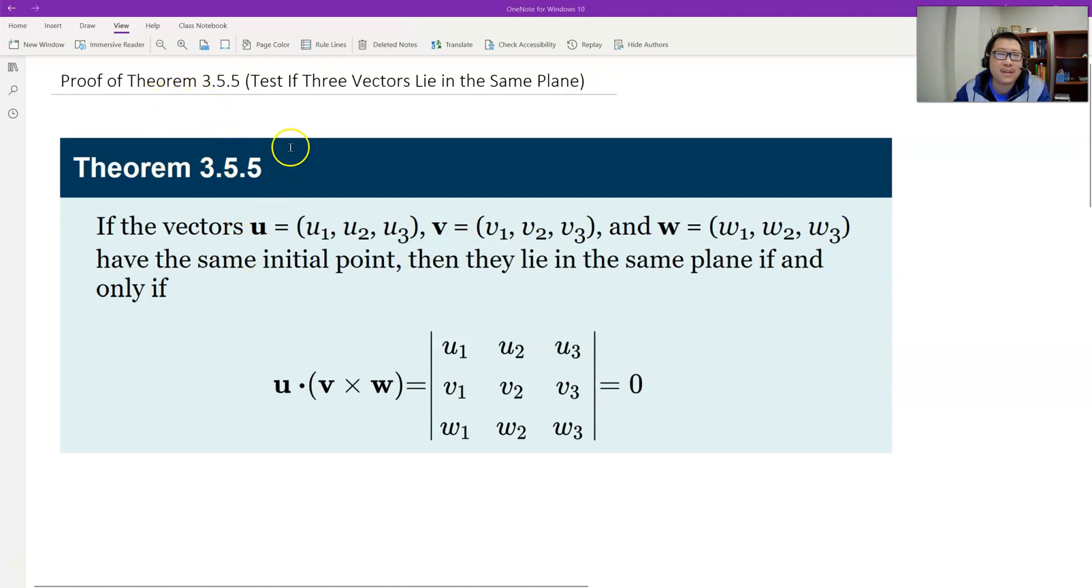This theorem gives us a test to see if three vectors align in the same plane or not in the same plane. The theorem says U, V, W, three vectors in three space, have the same initial point. Of course, we shape it together. Then they align in the same plane if and only if the scalar triple product equals zero.